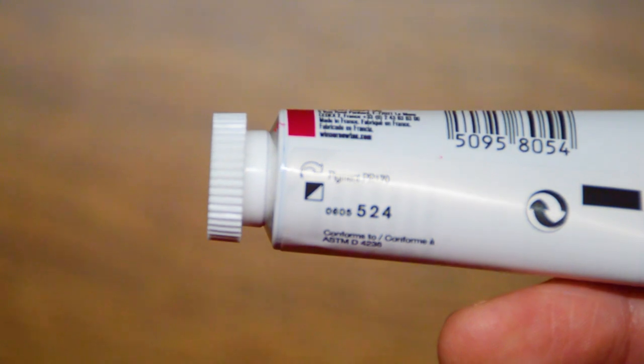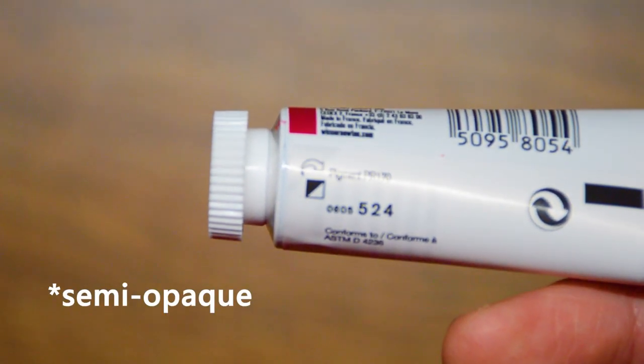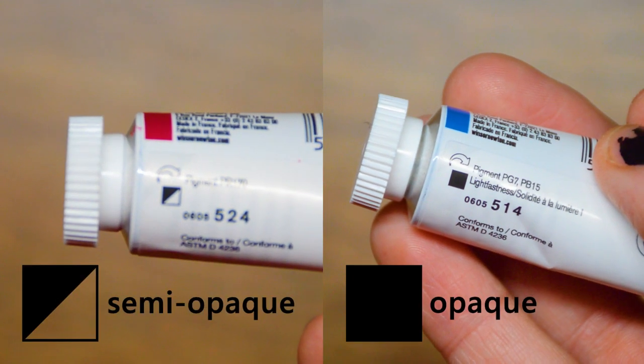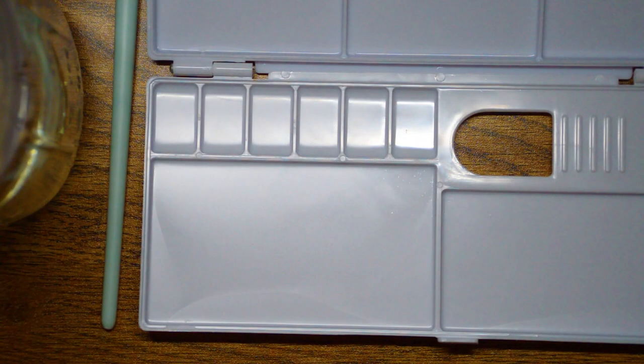In my rashness, I didn't realize that the primary red and lemon yellow I bought were both semi-transparent colors, not opaque. Always check whether the gouache tube has a black square or a half black square to figure out the opacity level. On to the painting.